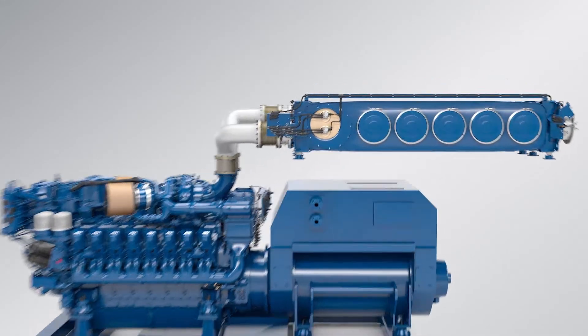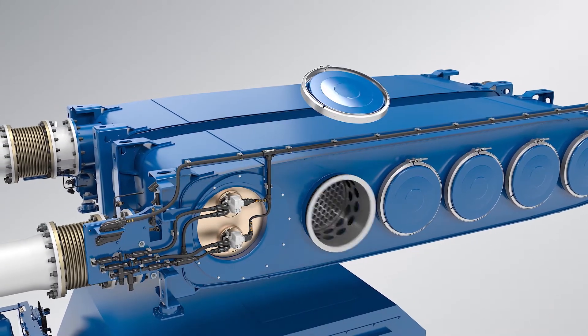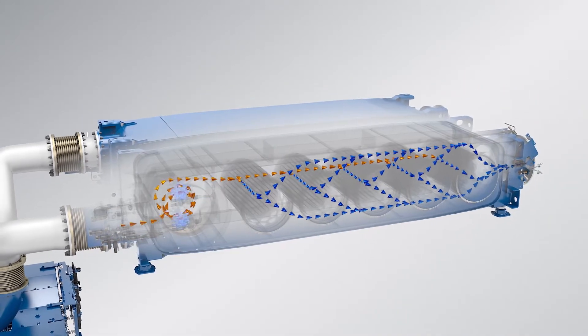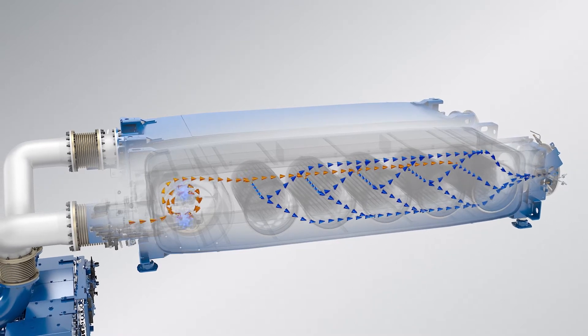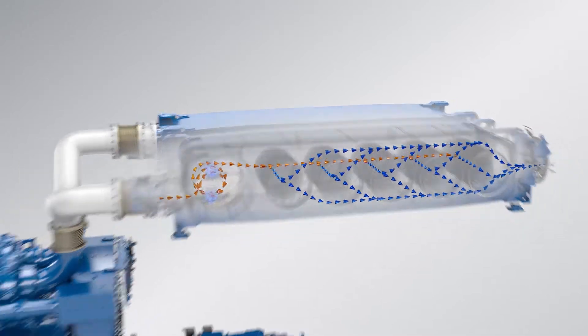Our catalysts, the main components in the reduction system, age with use. This is a chemical process that cannot be interrupted. In our systems it's possible to remove the catalyst cartridges and insert new ones in a way that allows the system to keep running and without having to open up maintenance hatches as the cartridges are easy to handle and replace.